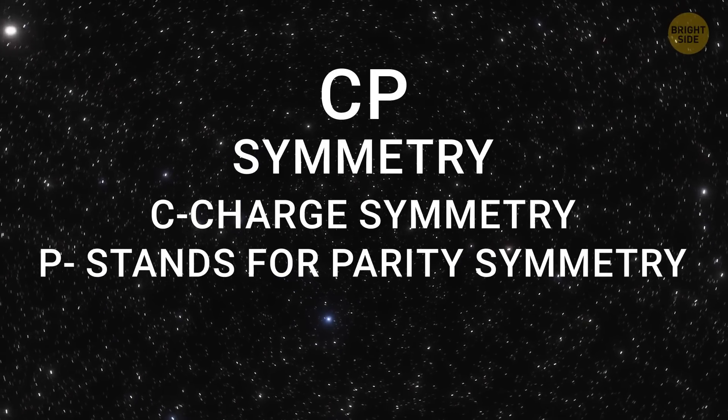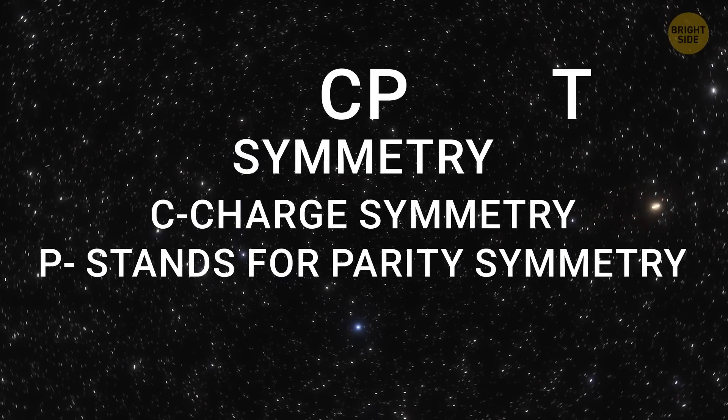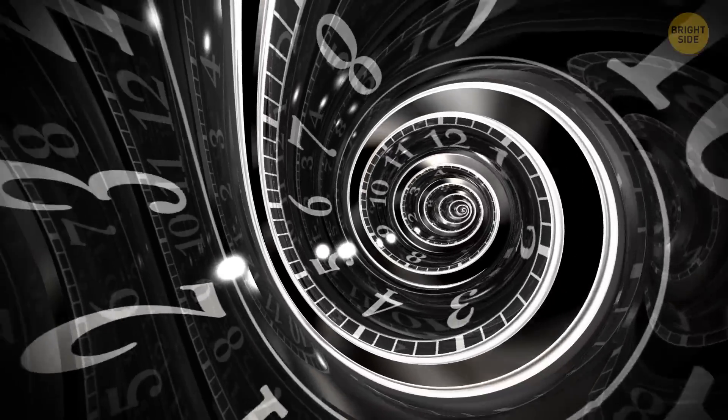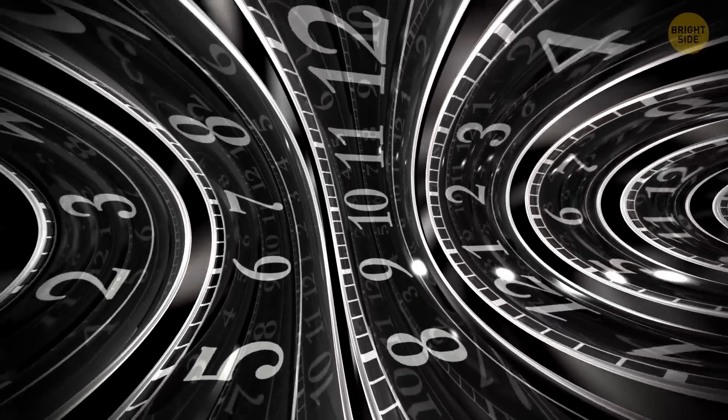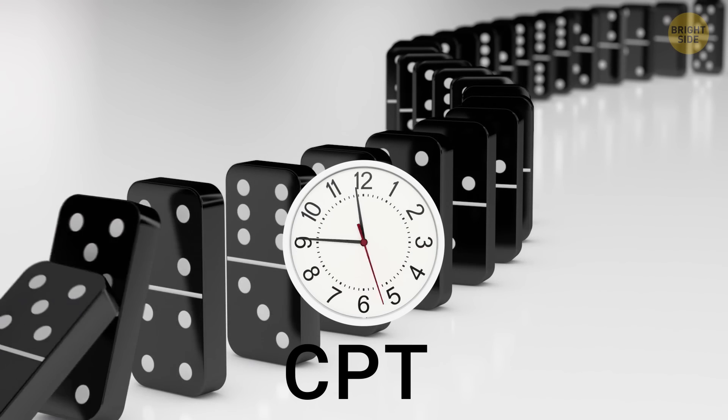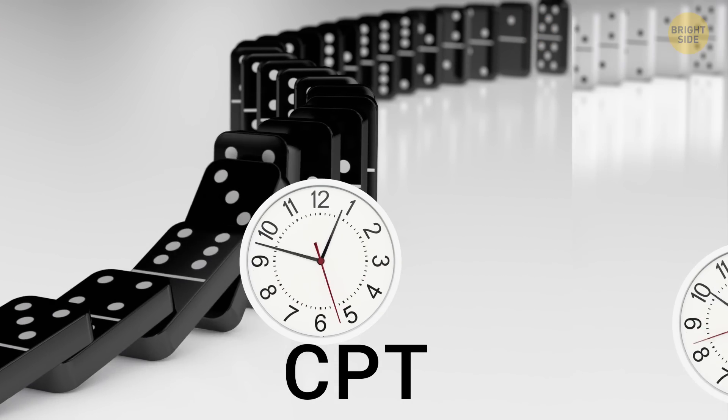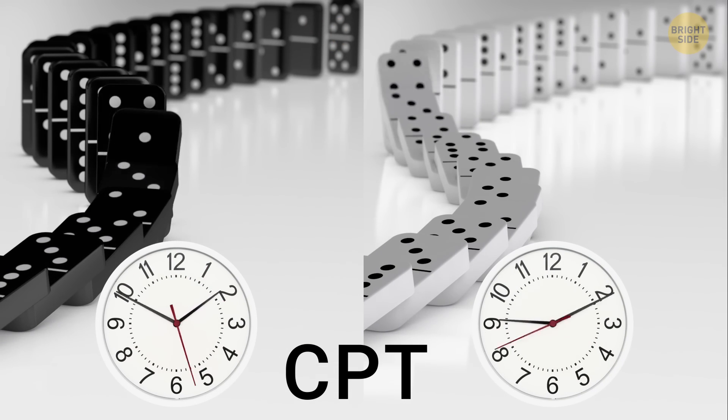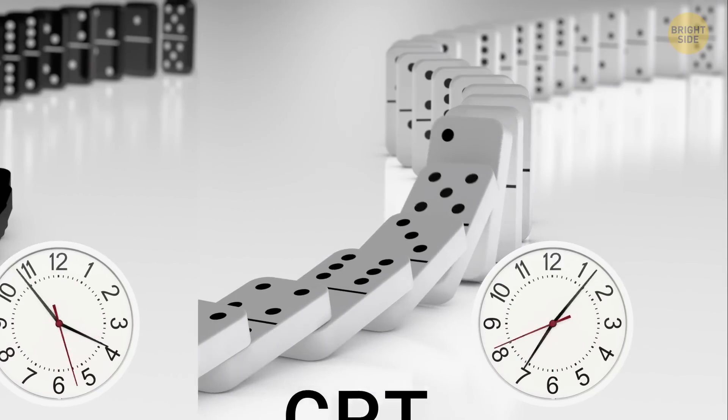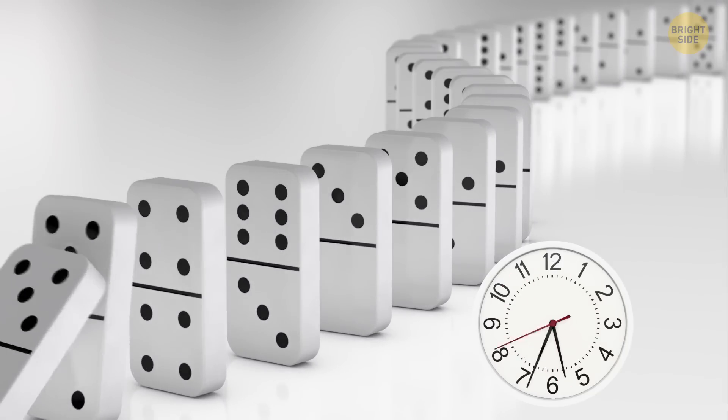And then, they finally figured out how to solve this mystery. They added another letter to CP symmetry, T, which stands for time reversal symmetry. This means that in the antimatter universe, time must flow from the future to the past. In this case, the CPT property held true. So, it turns out that the antimatter universe would be a mirror image of our universe, but with time flowing in the opposite direction.